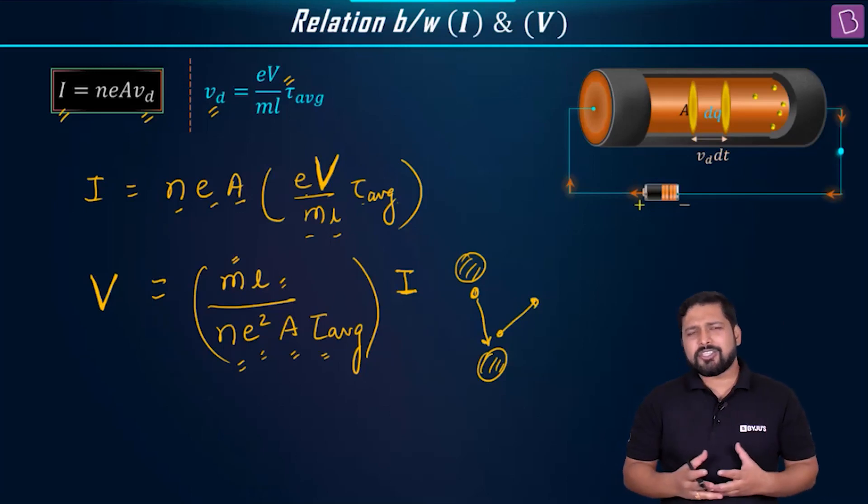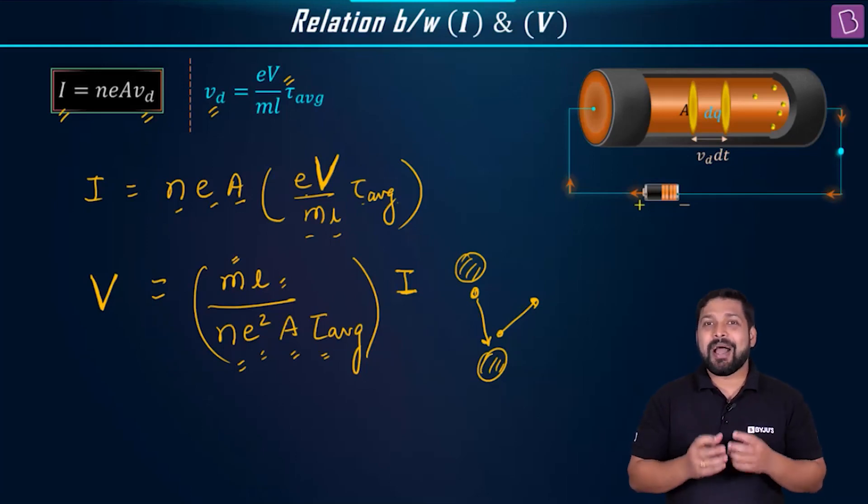Let us say if you change something like temperature. If you increase the temperature, what will happen? The collisions will happen more frequently. And that changes the value of tau. In that case, it is not remaining constant.